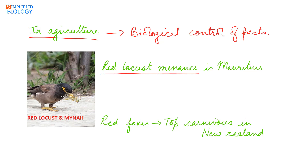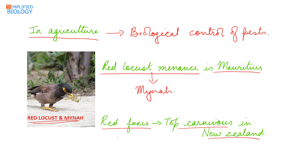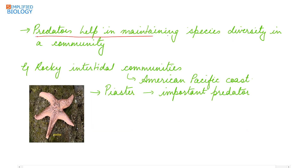Red locust menace in Mauritius was controlled by Mynah, a bird feeding on the red locust. Red foxes became the top carnivores in New Zealand due to the absence of natural carnivores.